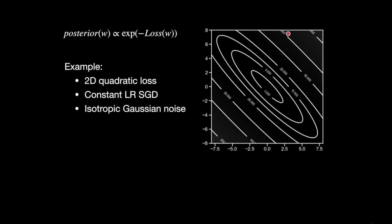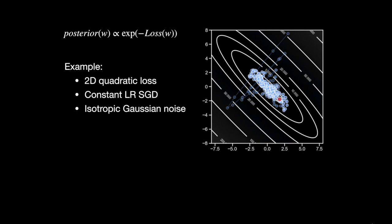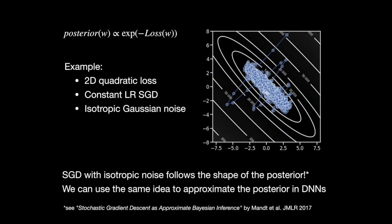A key challenge for approximate inference methods is to capture the geometry of the posterior. The key idea of our work is to extract information from the SGD trajectory to approximate the posterior. If we have a two-dimensional quadratic loss function and run SGD with isotropic Gaussian noise in the gradients, SGD iterates follow the shape of the loss. Since the posterior density is proportional to the exponent of negative loss, SGD also captures the shape of the posterior.